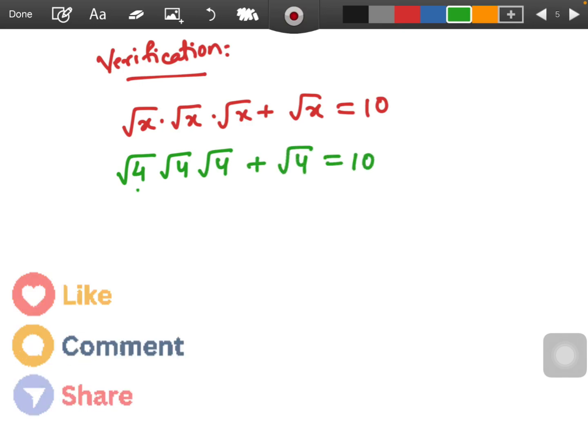So this will be root 4 is what? 2 into 2 into 2 plus 2 and here when we multiply 2 three times it will be 8.